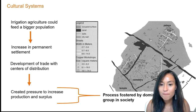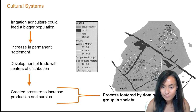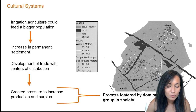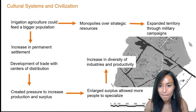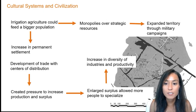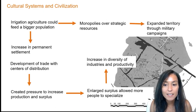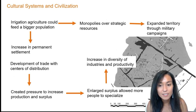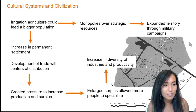The creation of food surplus and the emergence of a stratified society were really important here, and you can see this kind of evolution according to Adams' model through the next couple of slides. Eventually the higher population within these Mesopotamian cities led to monopolies over strategic resources, and these communities became more powerful than their neighbors and expanded their territory through military campaigns. Such cities became early centers of major religious activities as well as technological and artistic innovation.